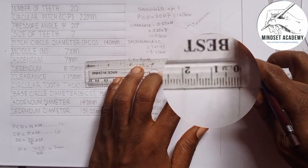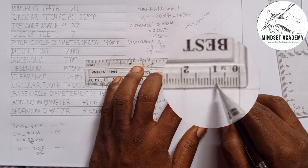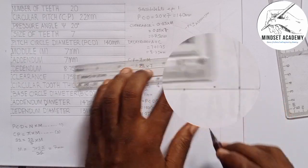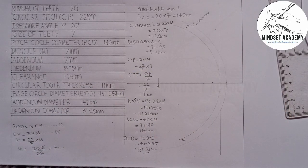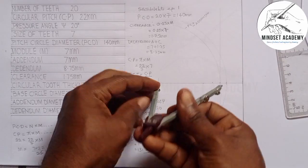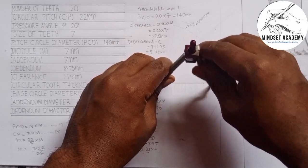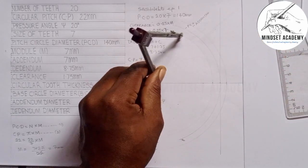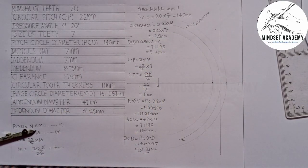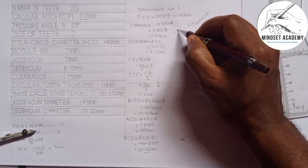Step 3: draw the dedendum circle. The dedendum is the radial depth of the teeth below the PCD, measured downward. The dedendum is 8.75 mm, so I measure 8.75 mm from point G, place the compass at G, and draw an arc below the PCD. That point is my dedendum.